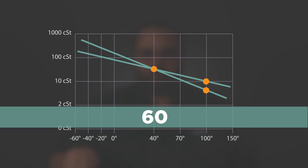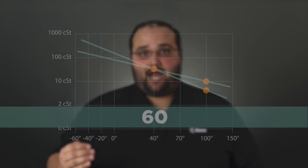Traditionally, the fluids with the higher viscosity index are going to be your synthetic fluids. So if you have a machine that is running very hot — well over 100 degrees Fahrenheit — you want to make sure that the oil you are putting in it has a high viscosity index.